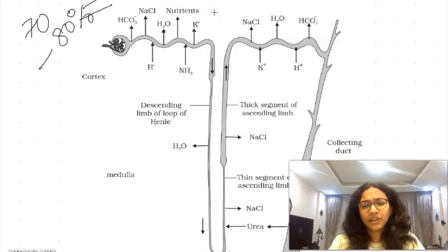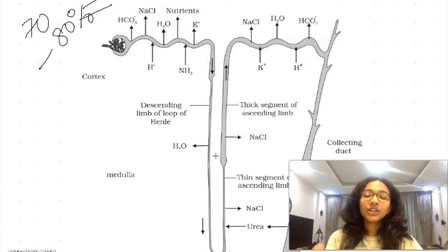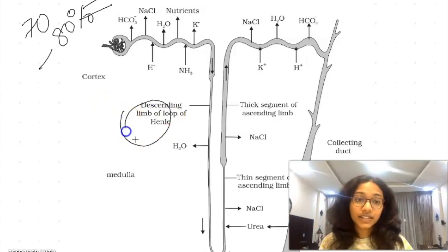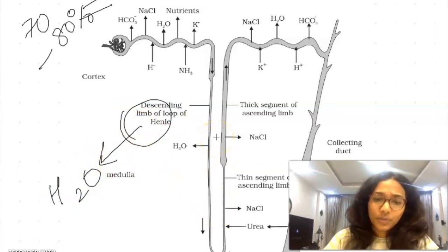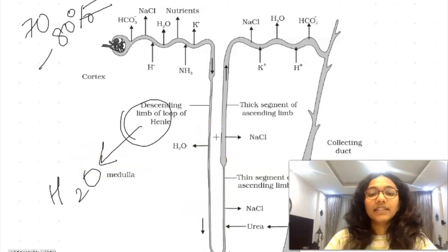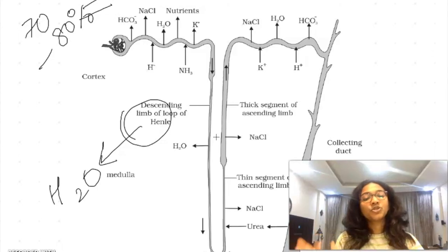Let's come to loop of Henle. Loop of Henle is where major part of your entire reabsorption will take place. The descending loop of Henle is impermeable to electrolytes, so only water can go out, electrolytes cannot go out. So water keeps going out of this loop of Henle. When water goes out, obviously its concentration increases. As we go down loop of Henle, the concentration of the filtrate increases. It is only permeable to water. Descending loop of Henle is permeable to H2O.